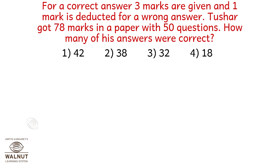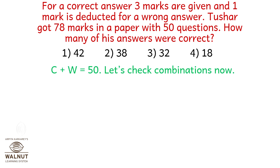For a correct answer 3 marks are given and 1 mark is deducted for a wrong answer. Tushar got 78 marks in a paper with 50 questions. How many of his answers were correct? Let's mark the correct answer as C and wrong answer as W. There are 50 questions, so C plus W is 50.